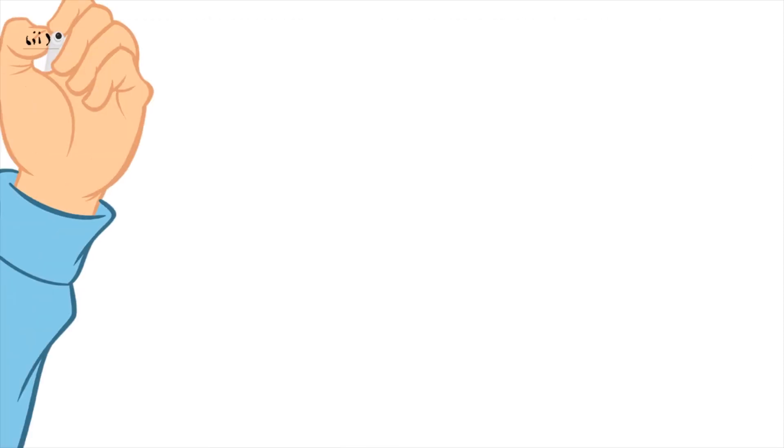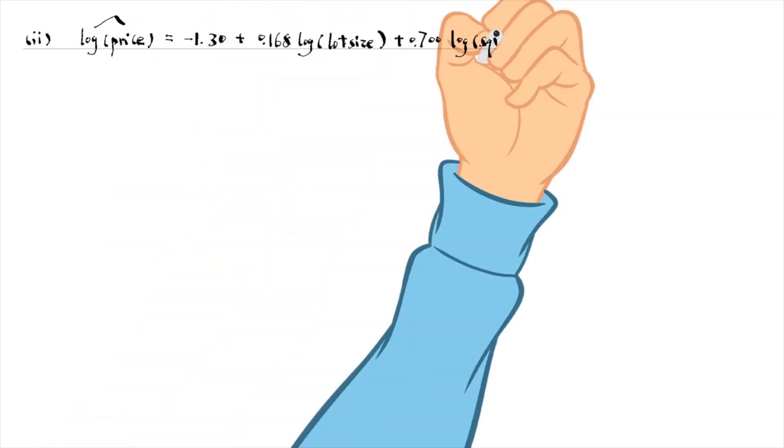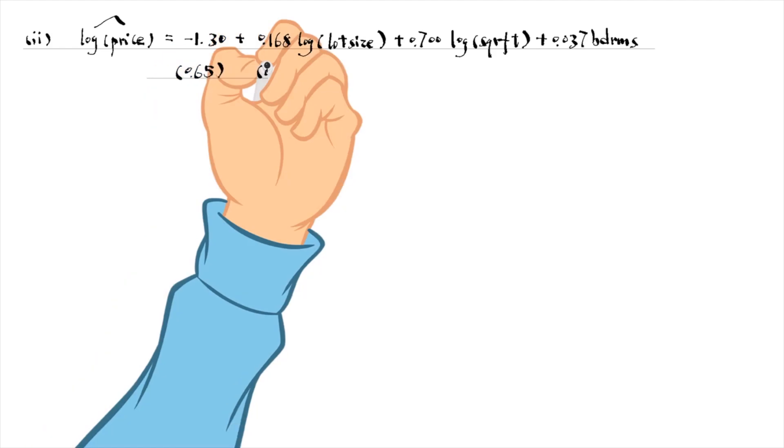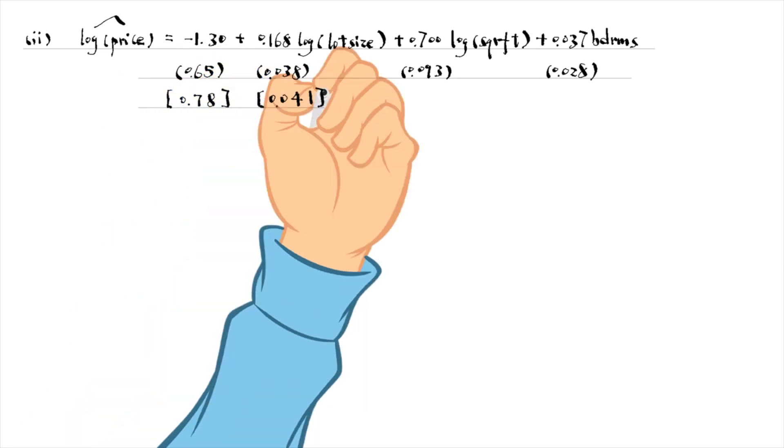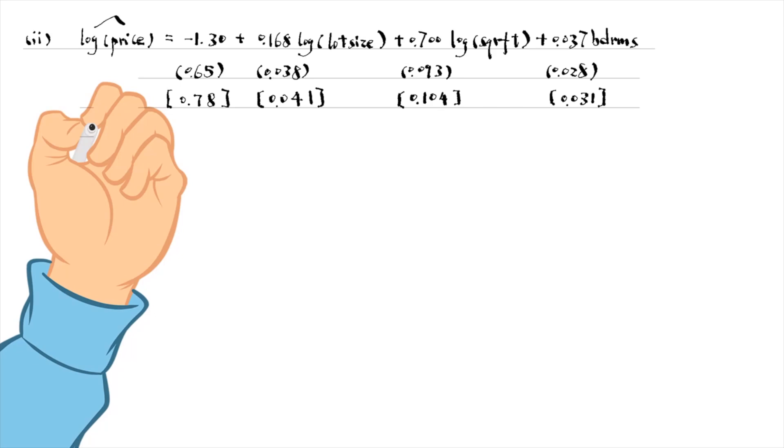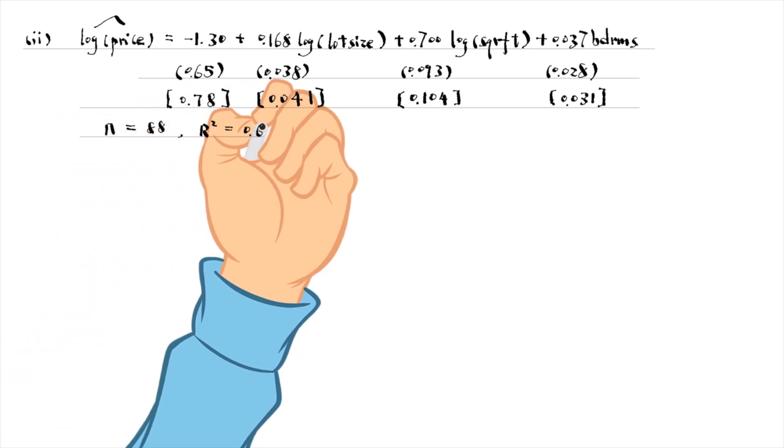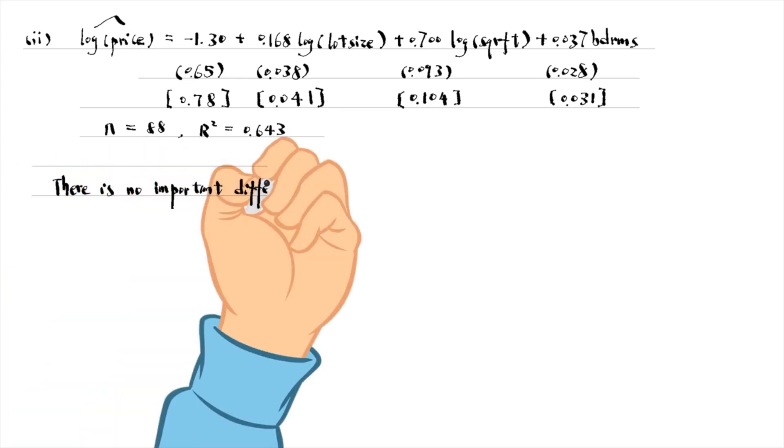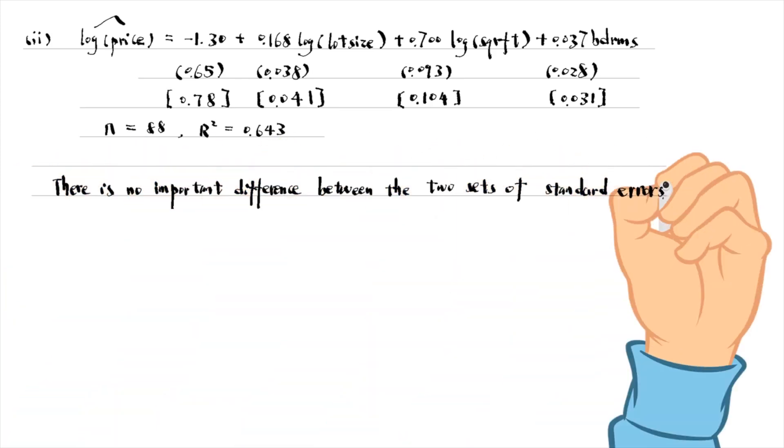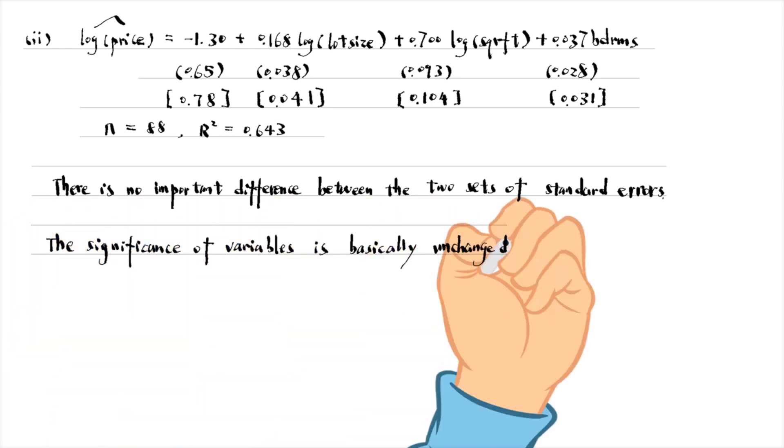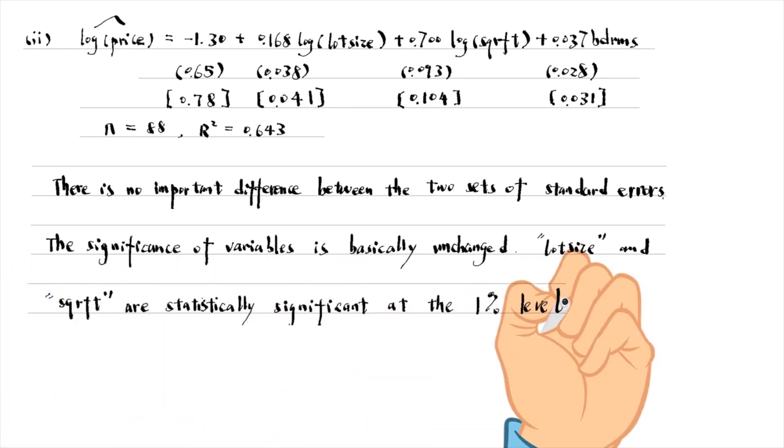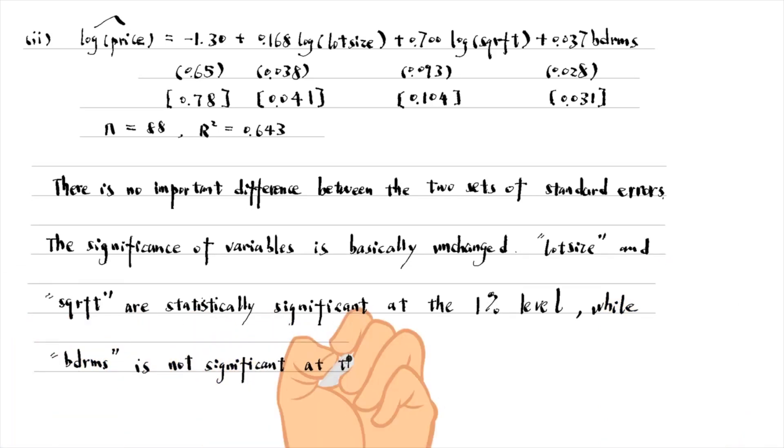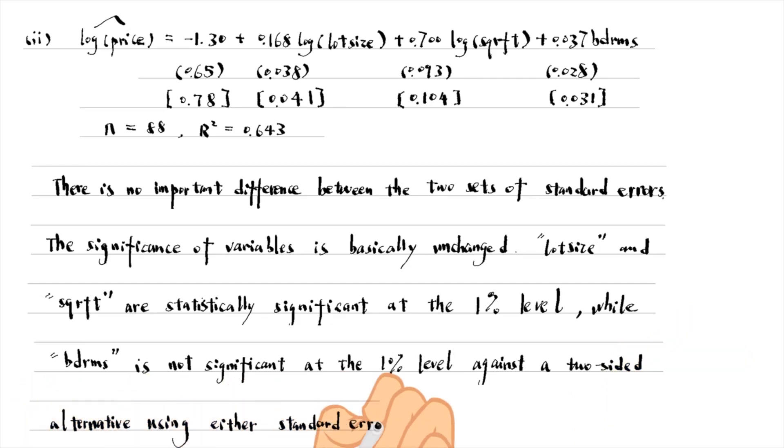For part 2, the estimated equation is as follows. There is no important difference between the two sets of standard errors. The significance of the variables is basically unchanged. The log size and the log square feet variables are statistically significant at the 1% level, while the bedroom number variable is not significant at the 10% level against a two-sided alternative, using either standard error.